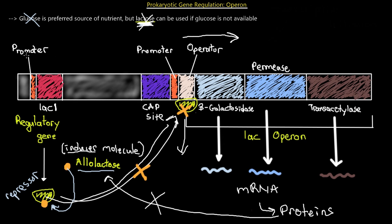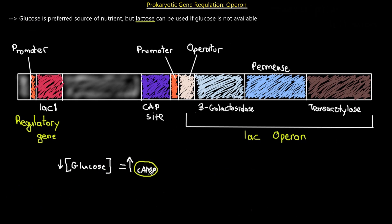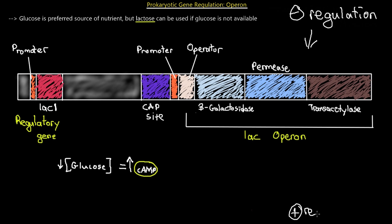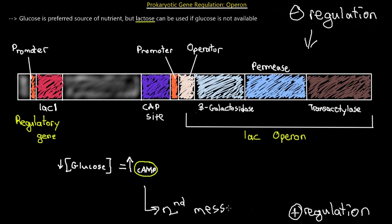Now let's look at positive regulation of the lac operon, since we've covered its negative regulation. Positive regulation of the lac operon is dependent on the cap site and a molecule called cyclic AMP. Cyclic AMP is famously known as a secondary messenger molecule — that's an important fact to remember.